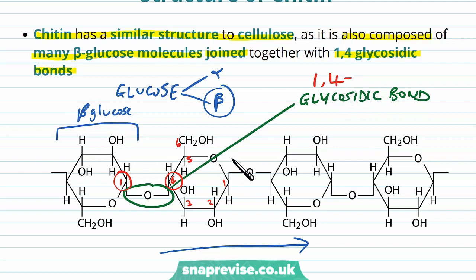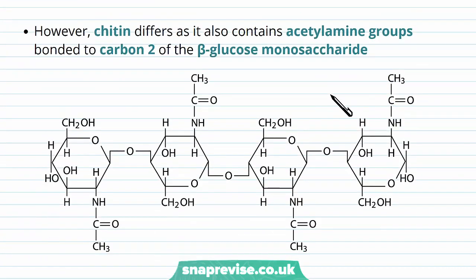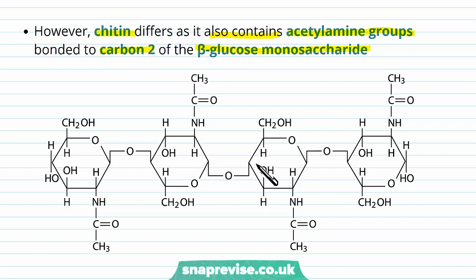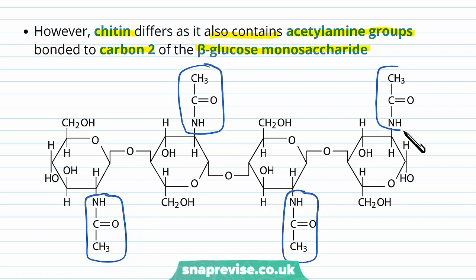So beta glucose is joined in a chain via 1,4 glycosidic bonds. The difference with chitin compared to cellulose is that it also contains another group called acetylamine groups, bonded to carbon number two of the beta glucose monosaccharide. You can see that on carbon two of the glucose, these groups are sticking out on the sides — and these groups are named acetylamine.